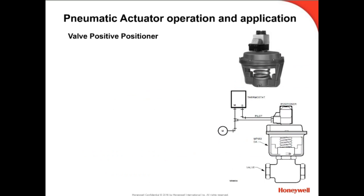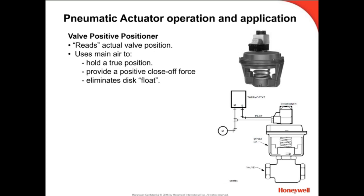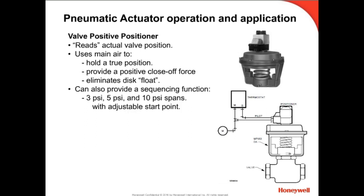When additional control power is required, valves with a positive positioner can be applied. This valve actuator positioner is connected to the actual valve stem and will provide additional control power to the actuator diaphragm. A controller branch-line signal pilots the positive positioner relay. The relay compares this signal to the actual physical valve position, then adjusts main air directly to the actuator diaphragm to hold the valve true to the control signal. It also has a built-in sequencing function for sequential valve operation to meet system control logic strategies.